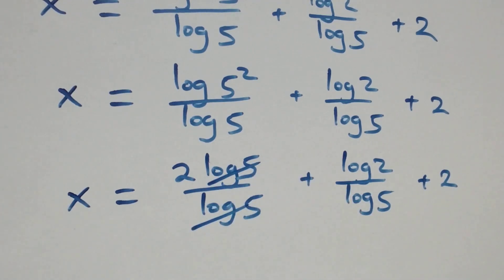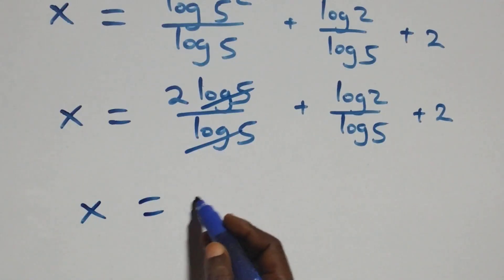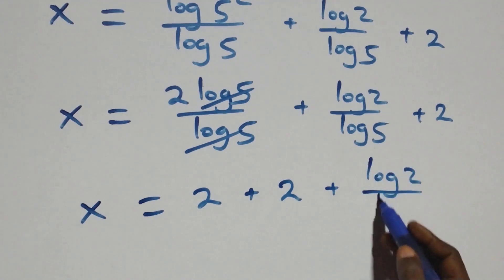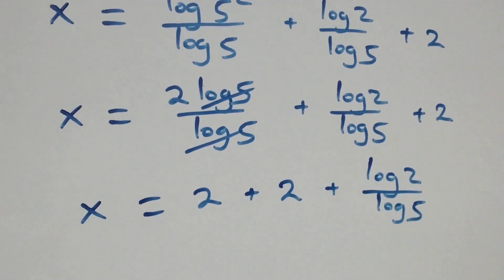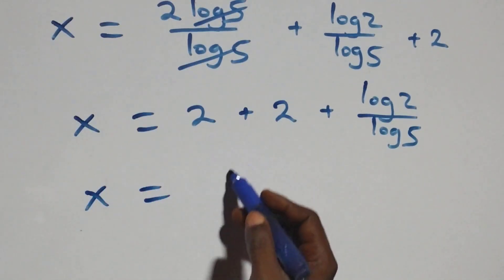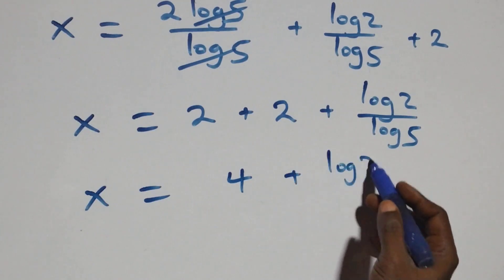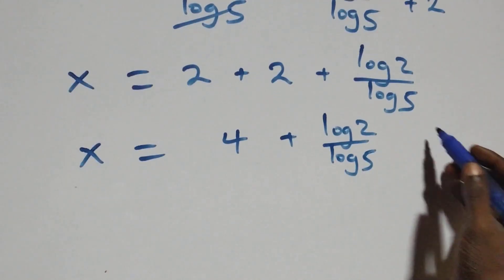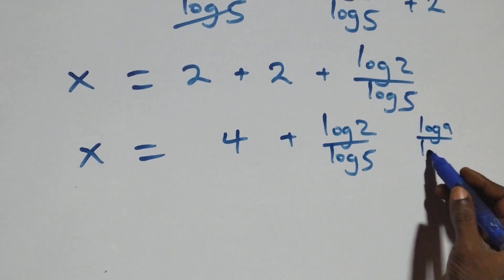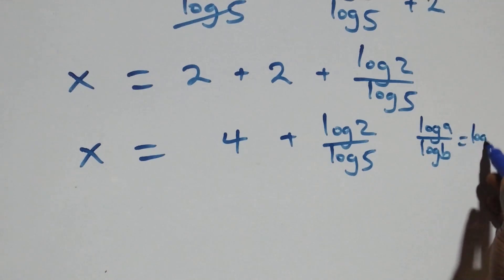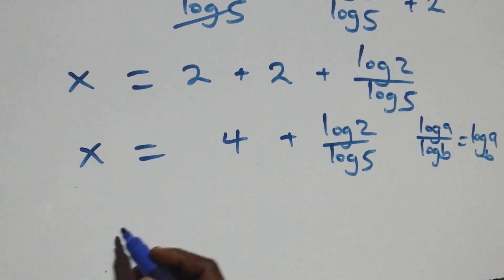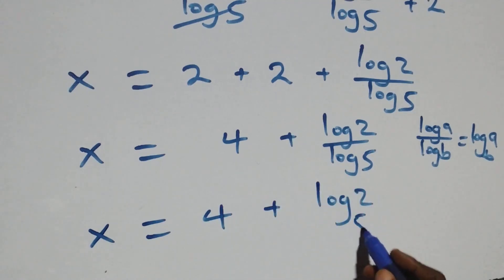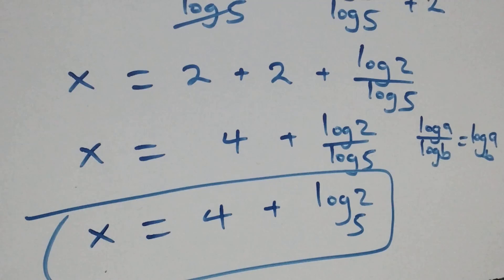Log 5 cancels, and we have 2. So x equals 2 plus 2 plus log 2 over log 5, which gives x equals 4 plus log 2 over log 5. Applying the change of base rule — log a over log b is the same as log a to base b — we have x equals 4 plus log 2 base 5. That is the value of x.